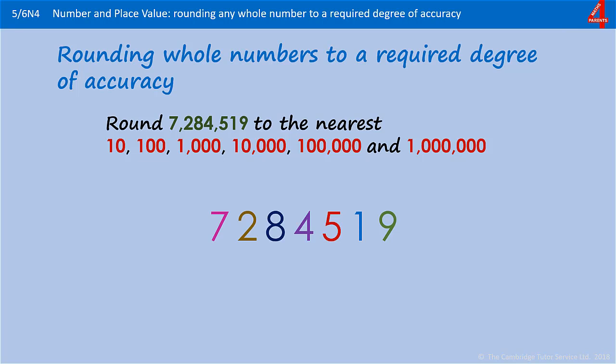For the first one, we're going to round it to the nearest ten. So we locate that tens digit, which here is a one, and then we look at the number that decides whether that one stays as one ten or is rounded to two tens. So we're looking at the digit in the ones column, which is nine. That means we're going to round up. So 7,284,519 rounded to the nearest ten will be 7,284,520.